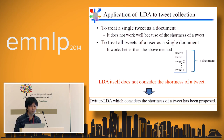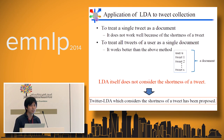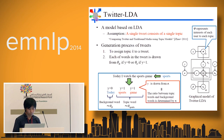There are two methods to apply LDA to tweet collections. The first one treats a single tweet as a document, but it does not work well because of the shortness of a tweet. The second one treats all tweets of a user as a single document, which works better. However, LDA itself does not consider the shortness of a tweet. Twitter LDA, which considers the shortness of a tweet, has been proposed.